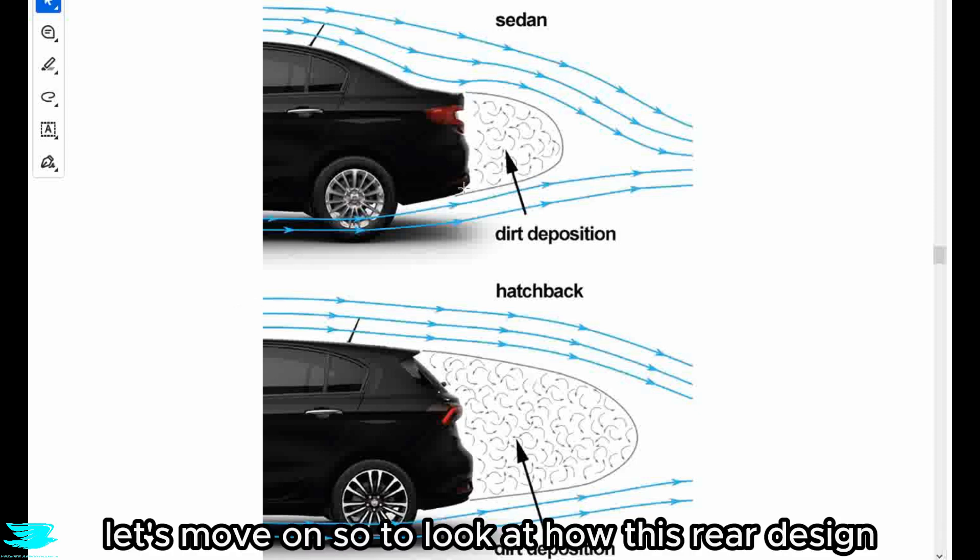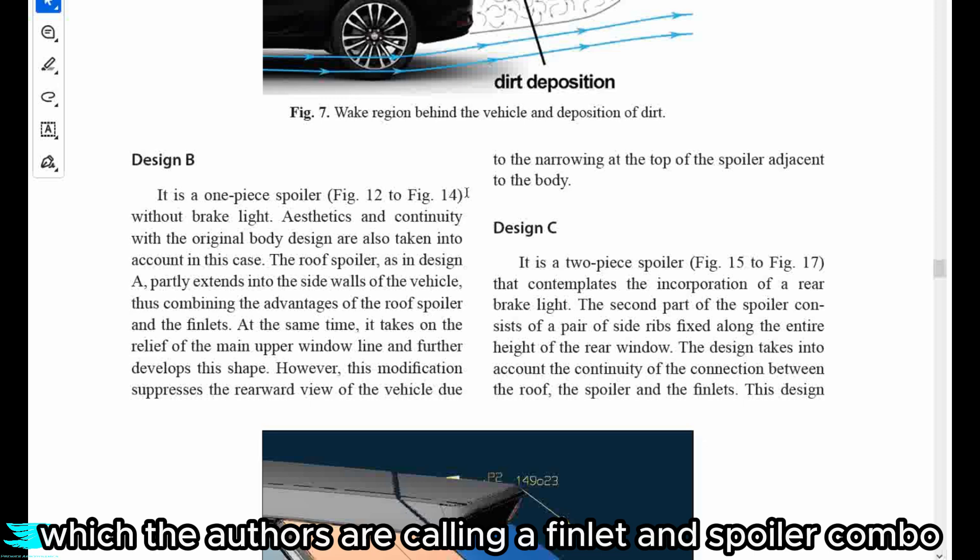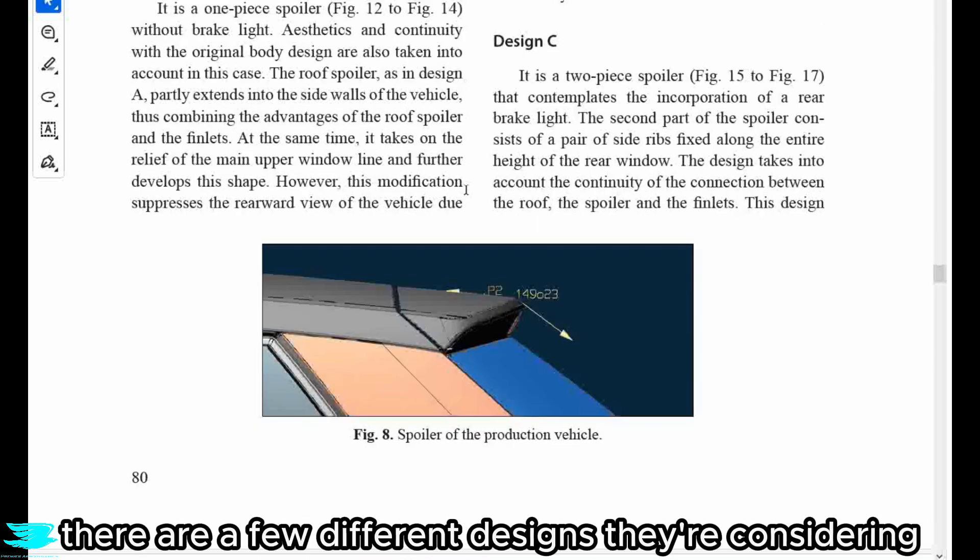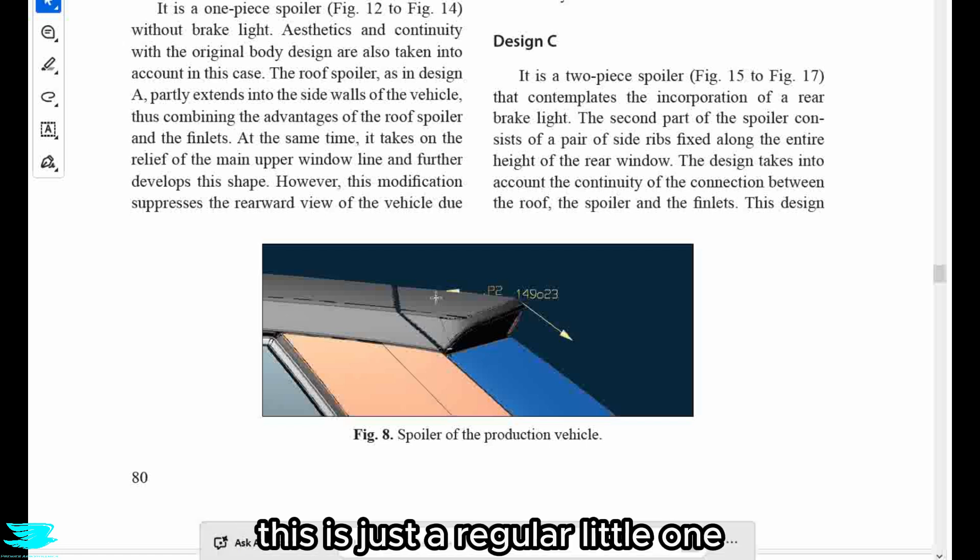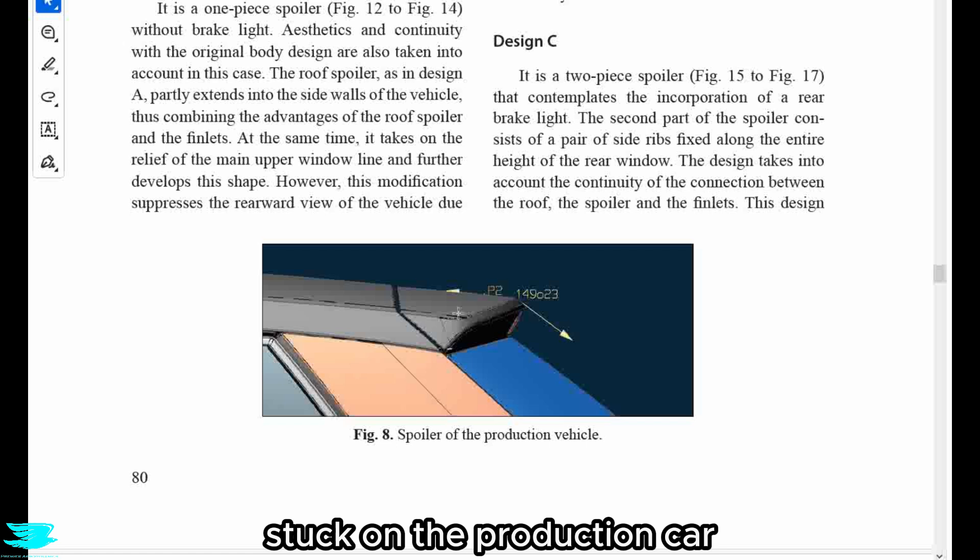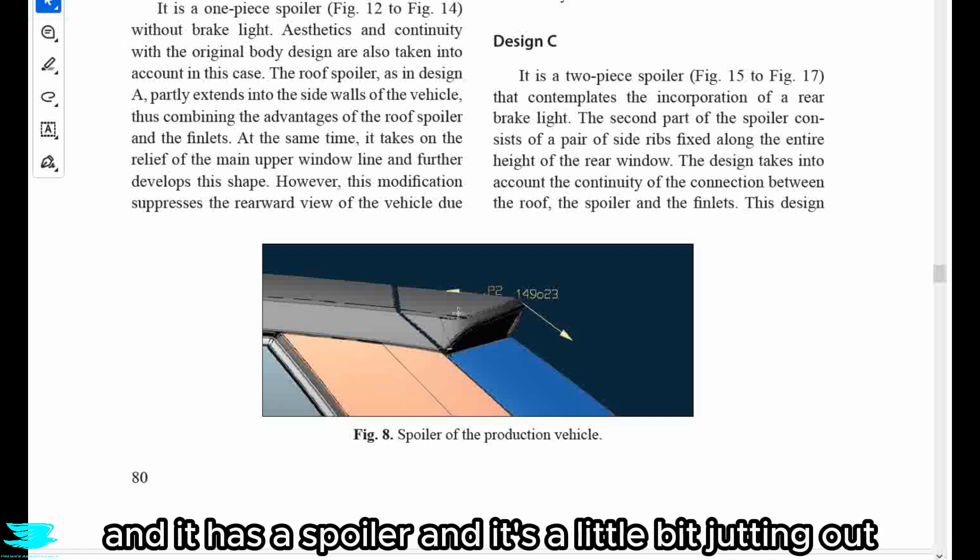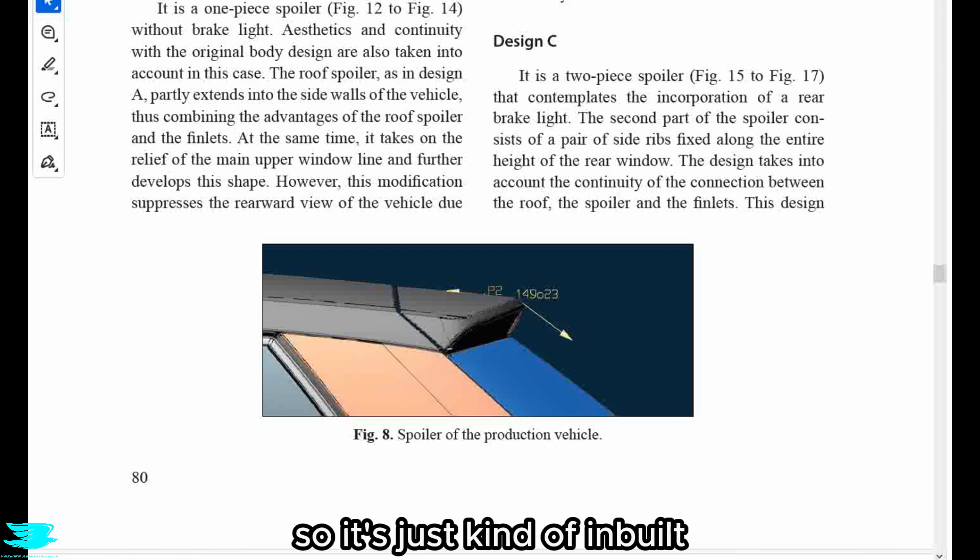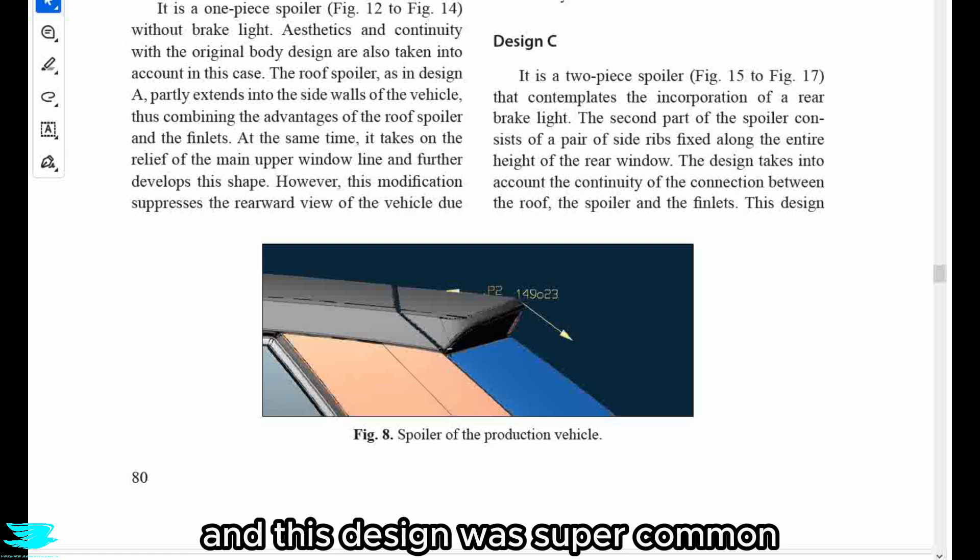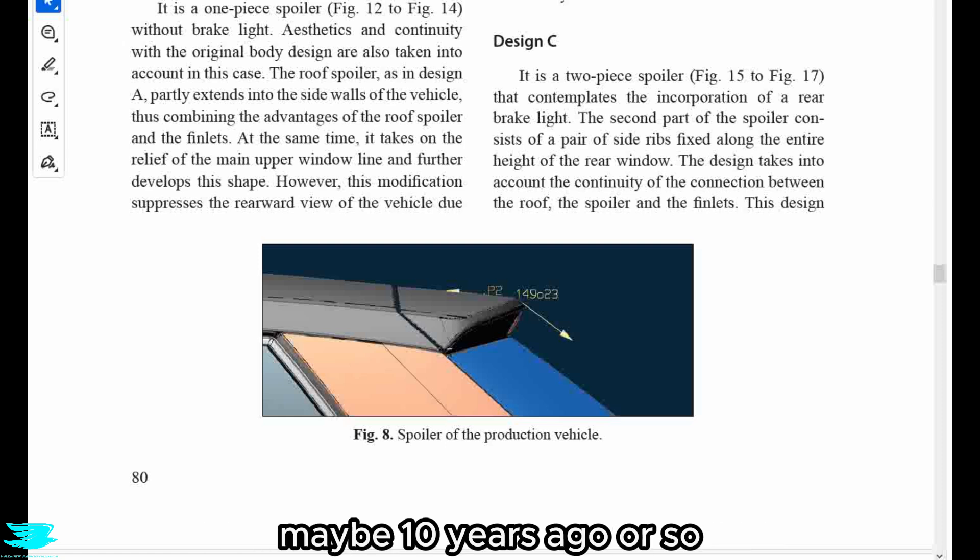Anyway, let's move on. So to look at how this redesign, which the authors are calling a finlet and spoiler combo, there are a few different designs they're considering. So the first is the baseline case, which we see in figure 8 here. This is just a regular little one stuck on the production car. It has a spoiler and it's a little bit jutting out, but there aren't any fins down the side windows. So it's just kind of inbuilt. And this design was super common, maybe 10 years ago or so.